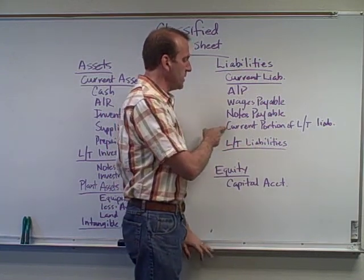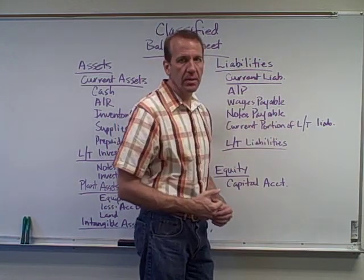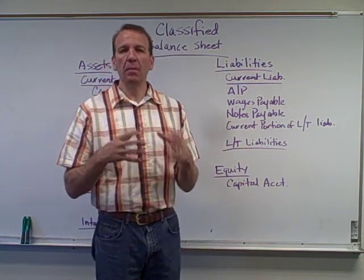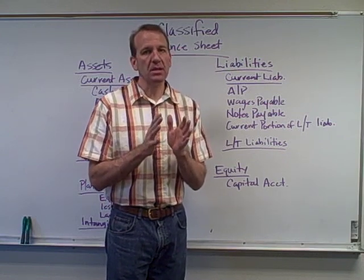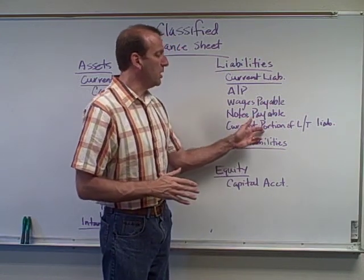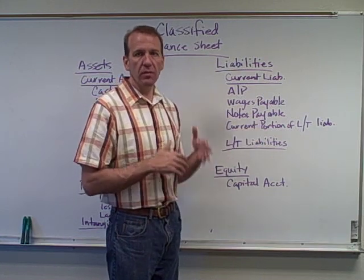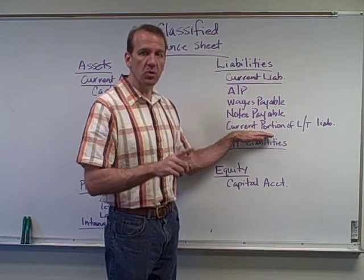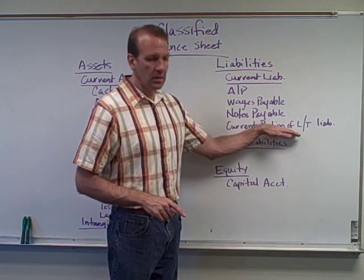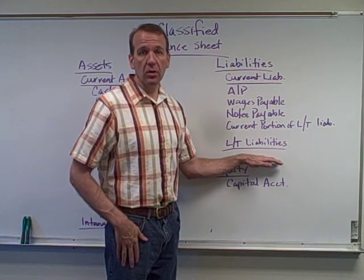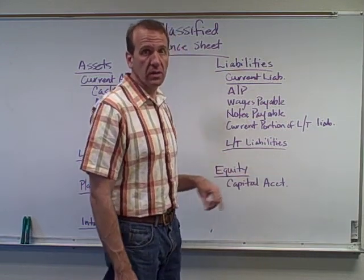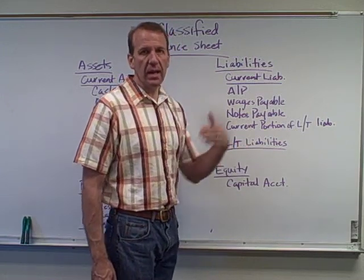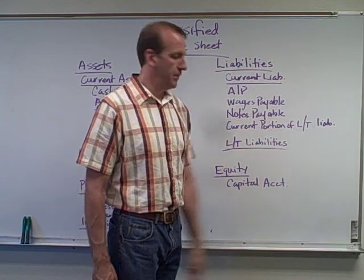An important point is the current portion of long-term liability. If you have a mortgage or note payable with monthly payments, part of that will be current — the part due next year. For example, if you owe twenty thousand dollars to the bank and two thousand is due next year, two thousand would be current and the other eighteen thousand would be long-term.